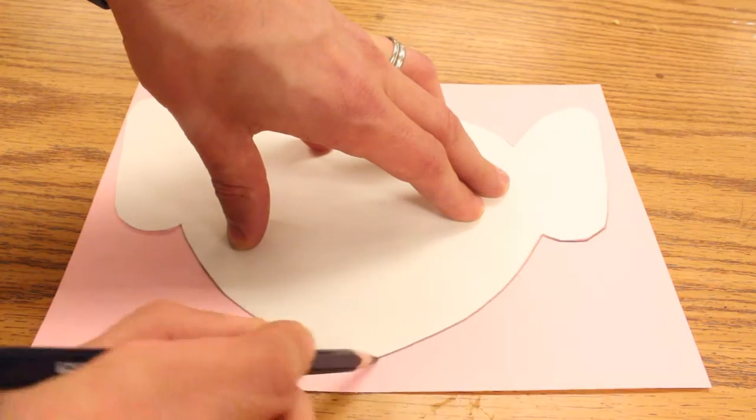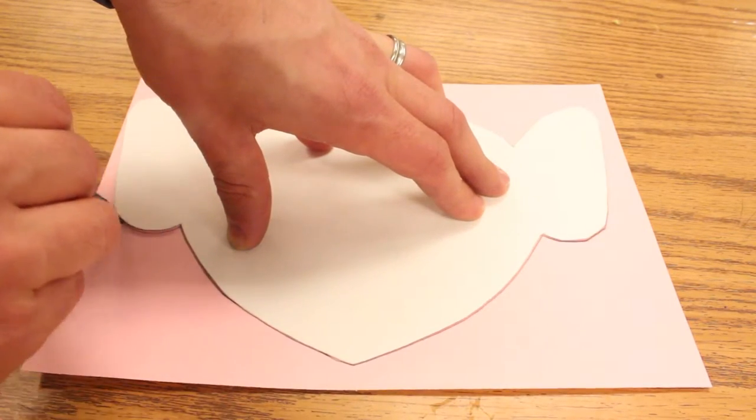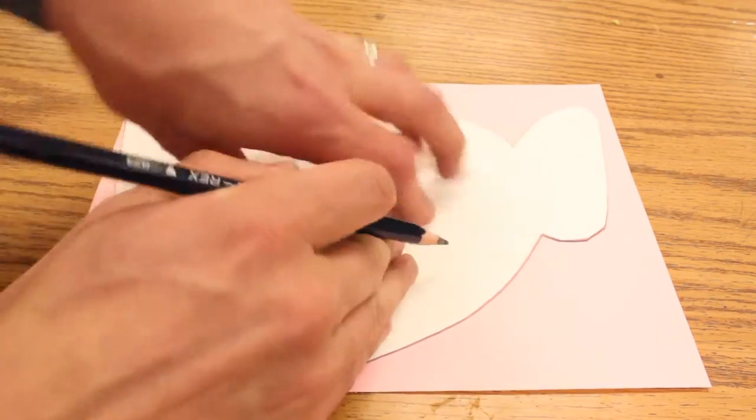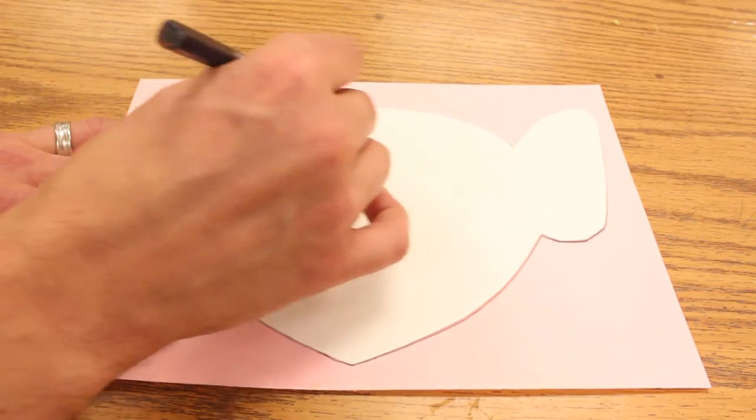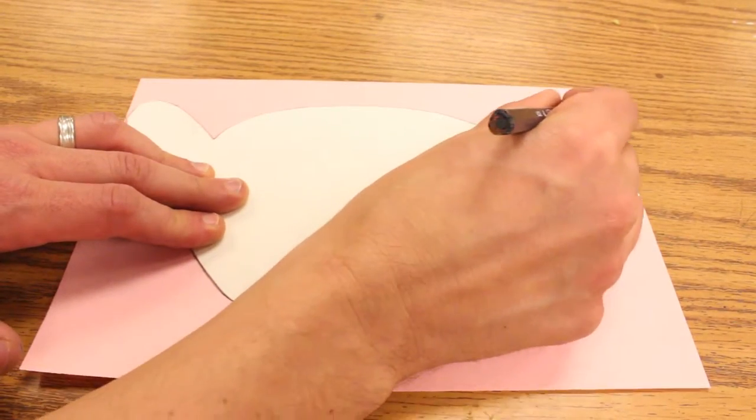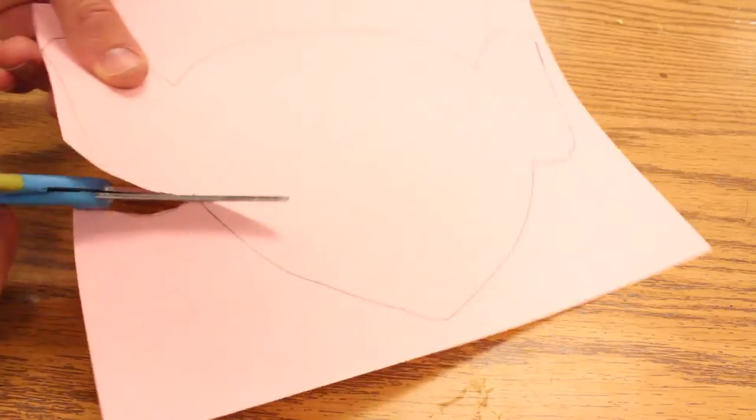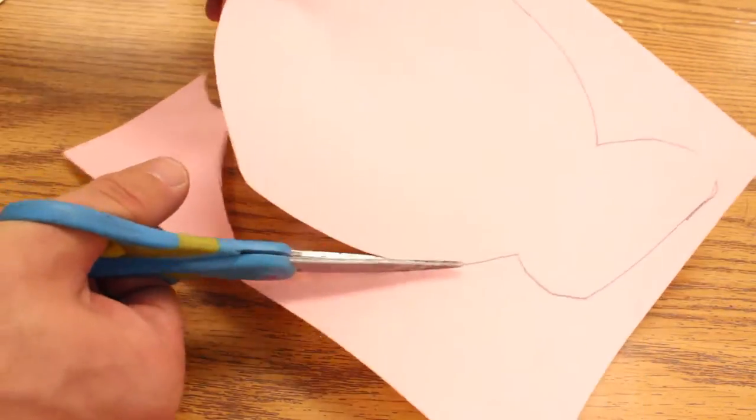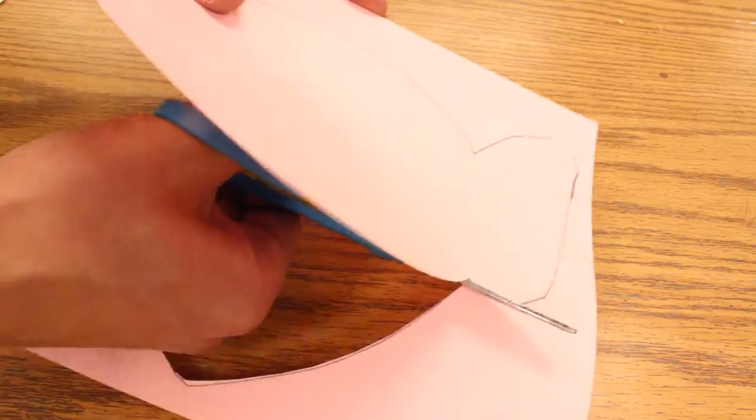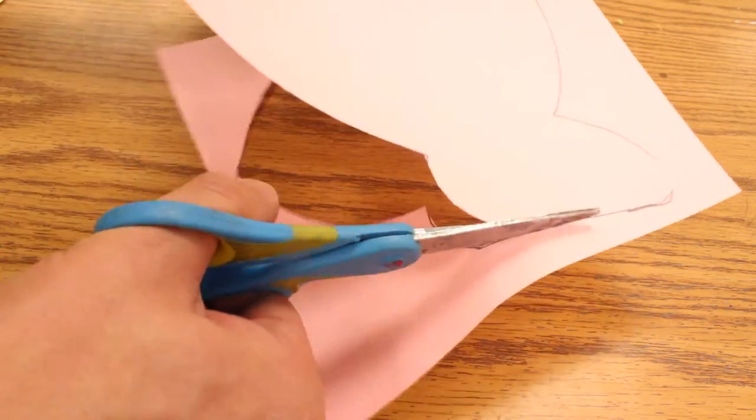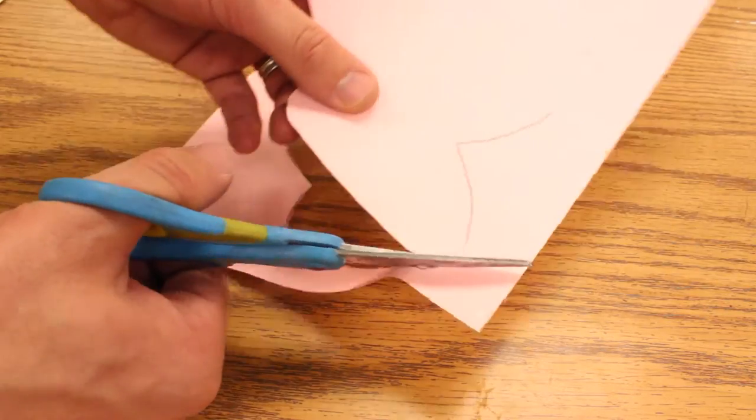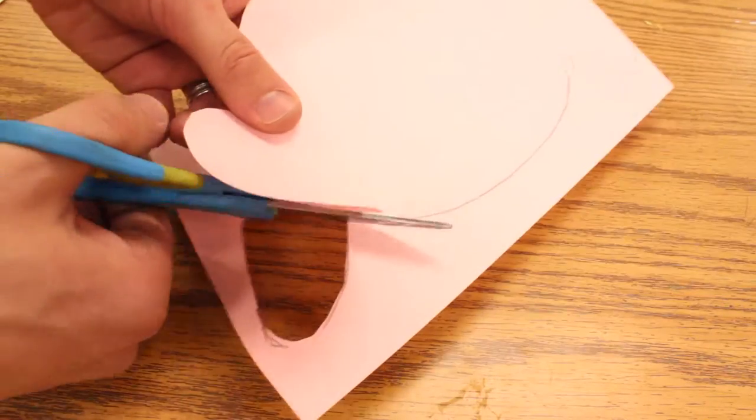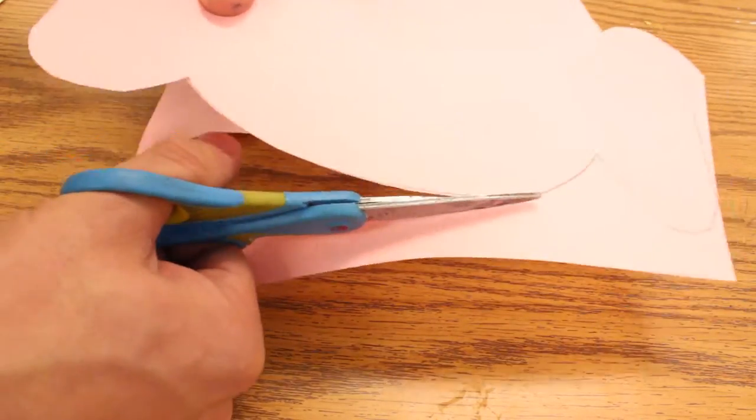You're going to trace around the head template, and then you're going to cut it out with scissors. There's no rule that says you have to cut all in one piece. You can cut it out in a couple different cuts. Just be careful to cut along that pencil line.